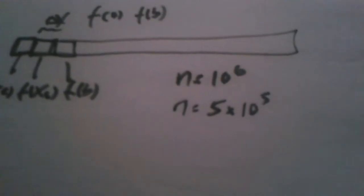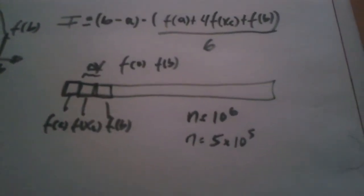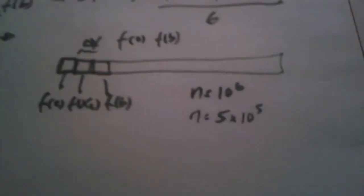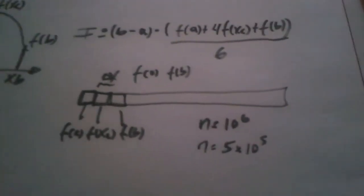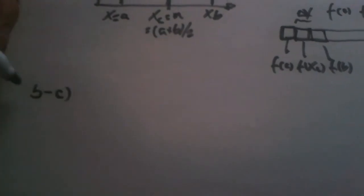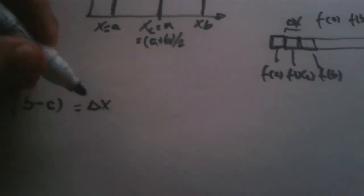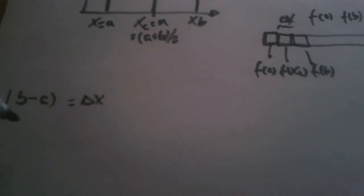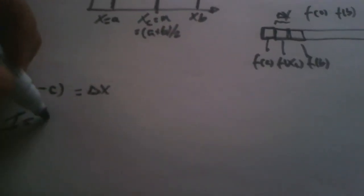We have to be very careful here, because if we initially said we want one million partitions, we are only using half of them. Why? Because we are using three points to do what we used to do with two points before. So let's see the final formula for this integration. Remember, b minus a is equal to delta x.